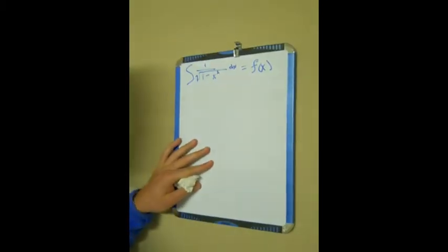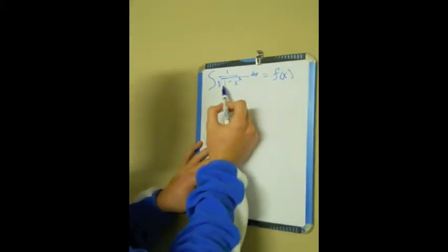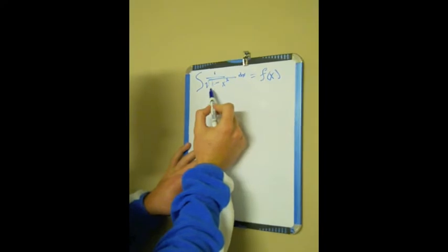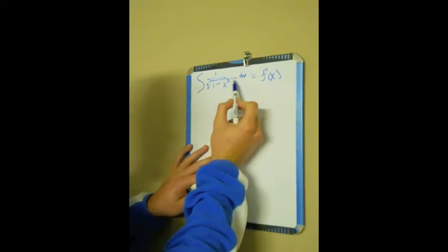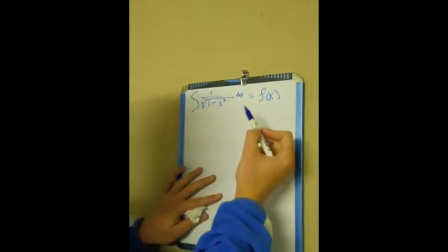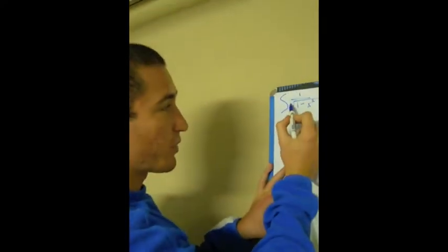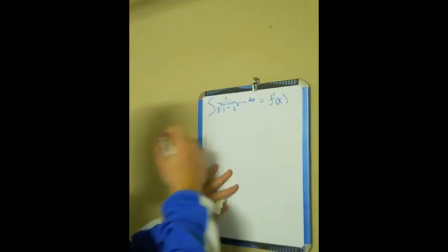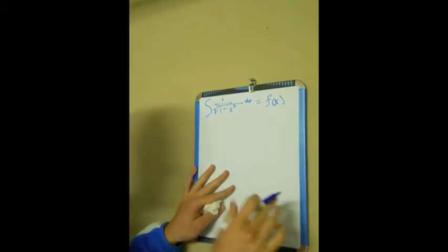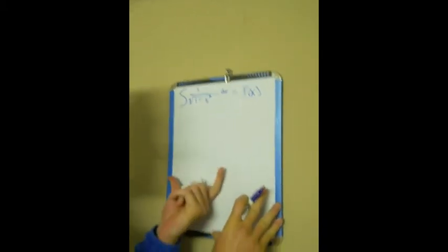So the first function we're going to work with is the integral of 1 over the square root of 1 minus x squared dx. We're going to try to integrate that — that's going to be our function f of x. The first thing we want to do is get rid of the square root sign, because that makes things very complicated.